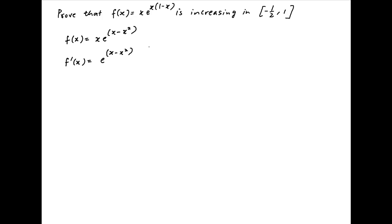f'(x) is equal to, applying the chain rule, e raised to the power x minus x squared times the derivative of x, which is 1, plus x times the derivative of e raised to the power x minus x squared, which equals e raised to the power x minus x squared times 1 minus 2x.